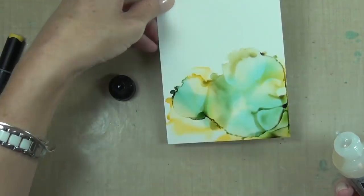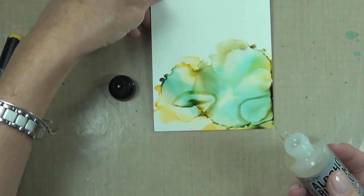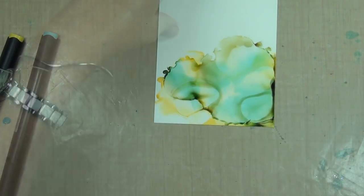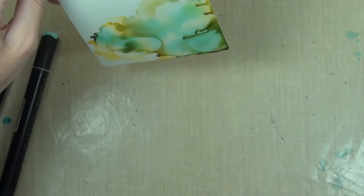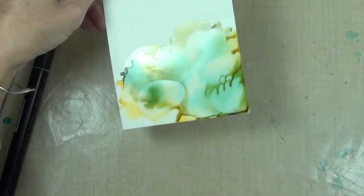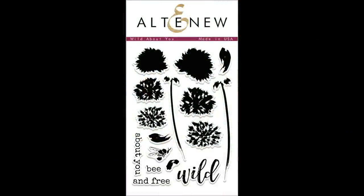Now I've focused all my coloring at the base of my card panel because that's where I want my images to be. I didn't like the way the color all collected at the edges so I just tipped the cardstock again and then I'll just set that aside to dry for a little while. The stamp set I want to be using today is called World About You.